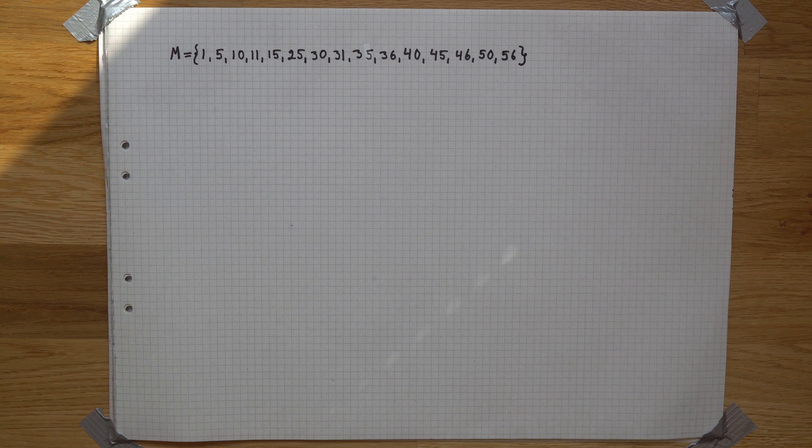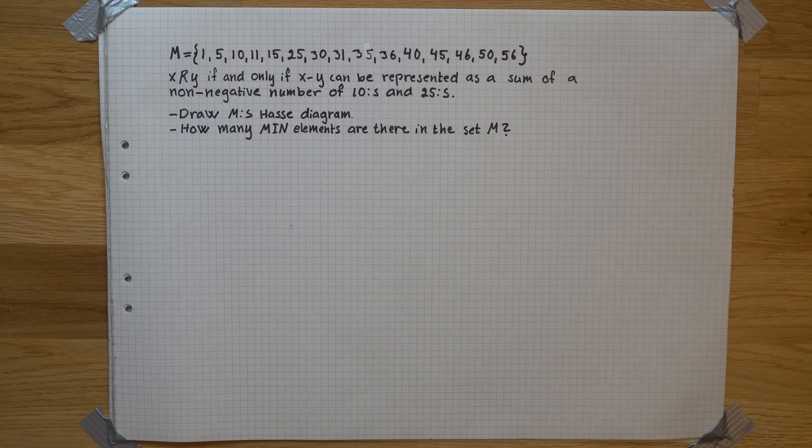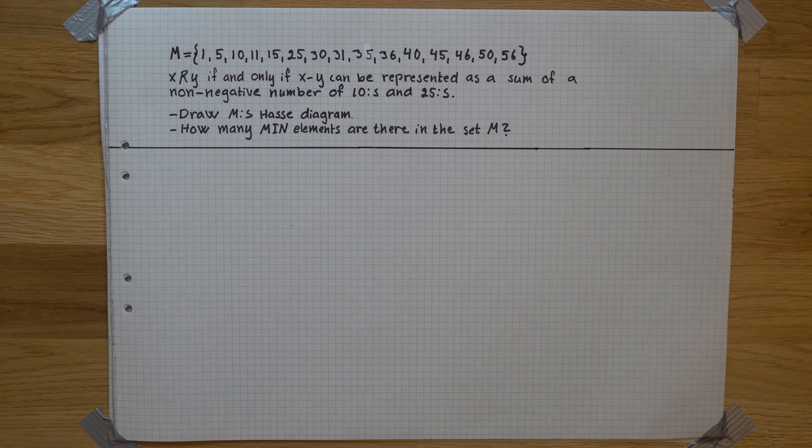We have the set M, where the conditions are that X is related to Y if and only if X minus Y can be represented as a sum of a non-negative number of 10s and 25s. The task is to draw the Hasse diagram and determine the number of minimal elements.